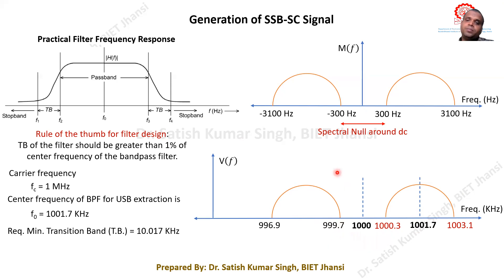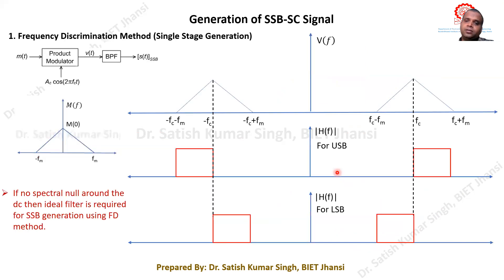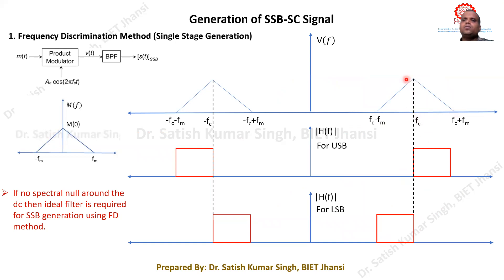Comparing to the previous example where there was no gap between sidebands, we now have approximately a 600 Hz spectral gap between the upper and lower sidebands. In the previous case with no gap, ideal filtering was the only option. Now, with a 600 Hz gap, there may be a possibility of using a practical band-pass filter.